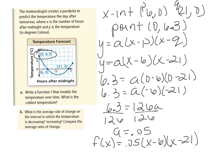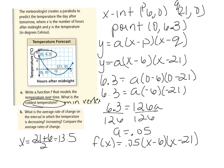Now it asks for what is the coldest temperature. Coldest means minimum, minimum means vertex. So let's find where the vertex is — halfway between 6 and 21: (21 plus 6) divided by 2 is 13.5. To find the actual temperature, I can plug 13.5 into my equation.